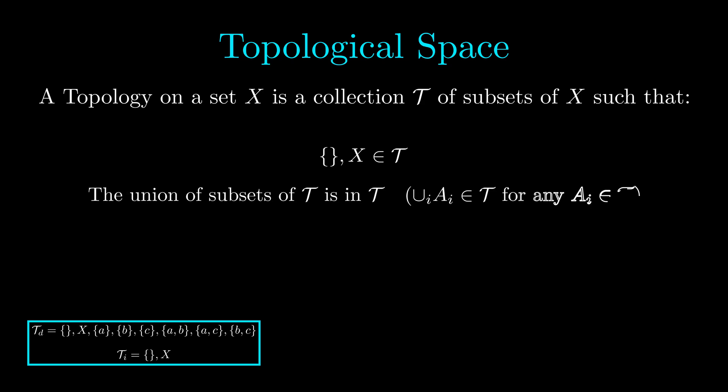Second, when you take an arbitrary union of subsets, you must remain in the collection. And since it's arbitrary, this means that the union can be finite or infinite. Lastly, the finite intersection of subsets must remain in the collection.